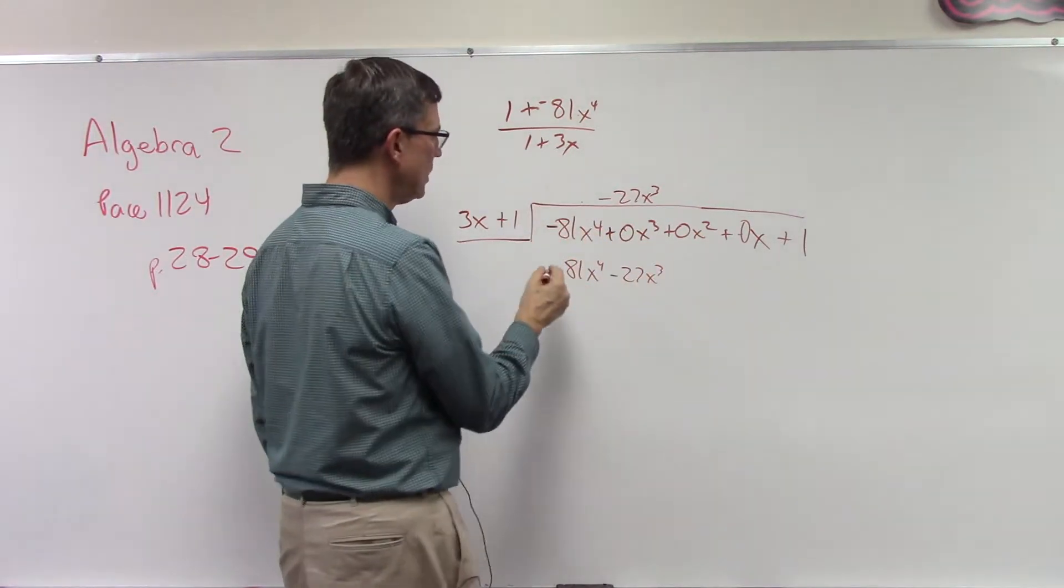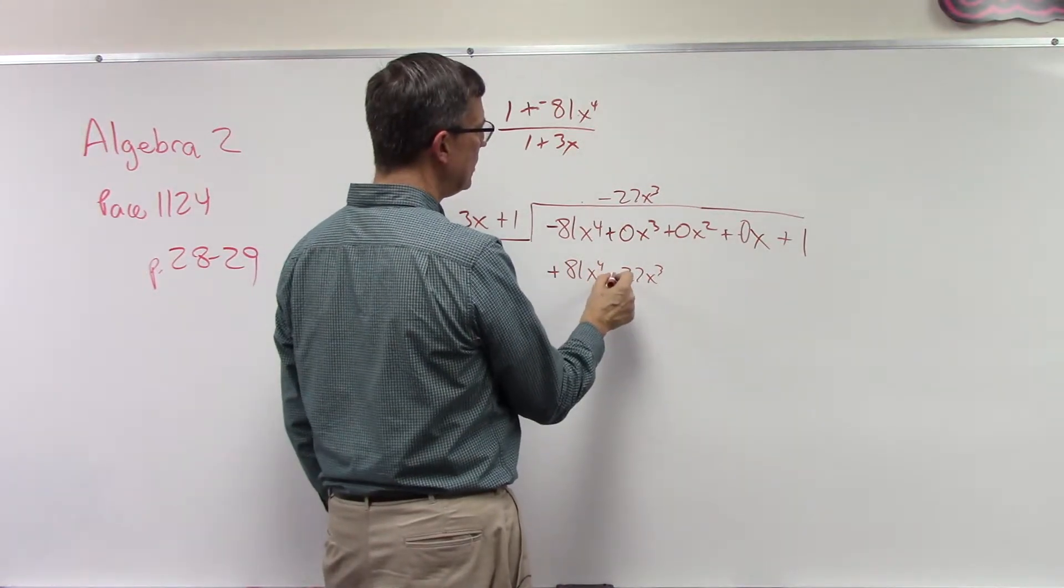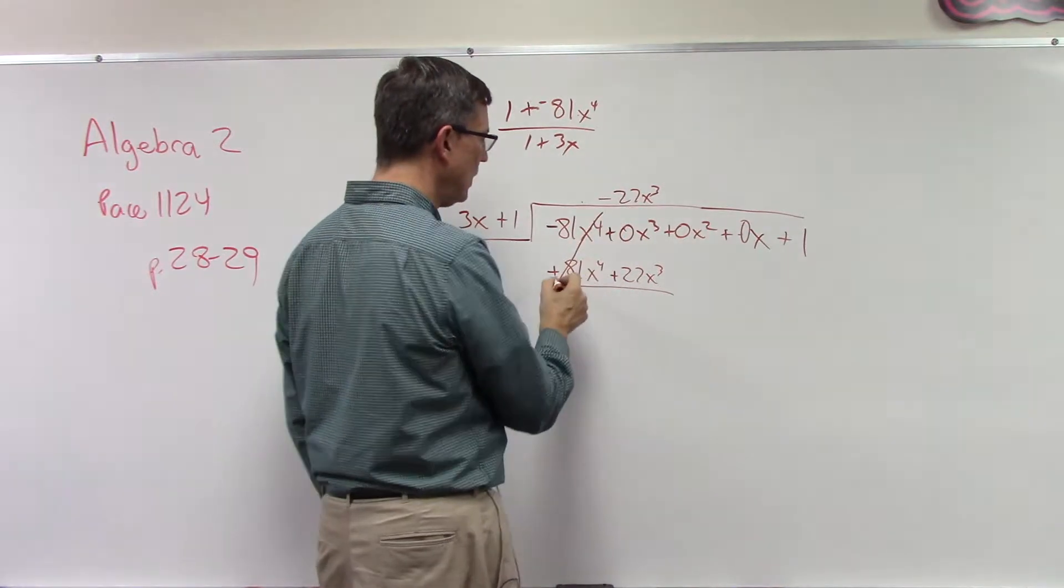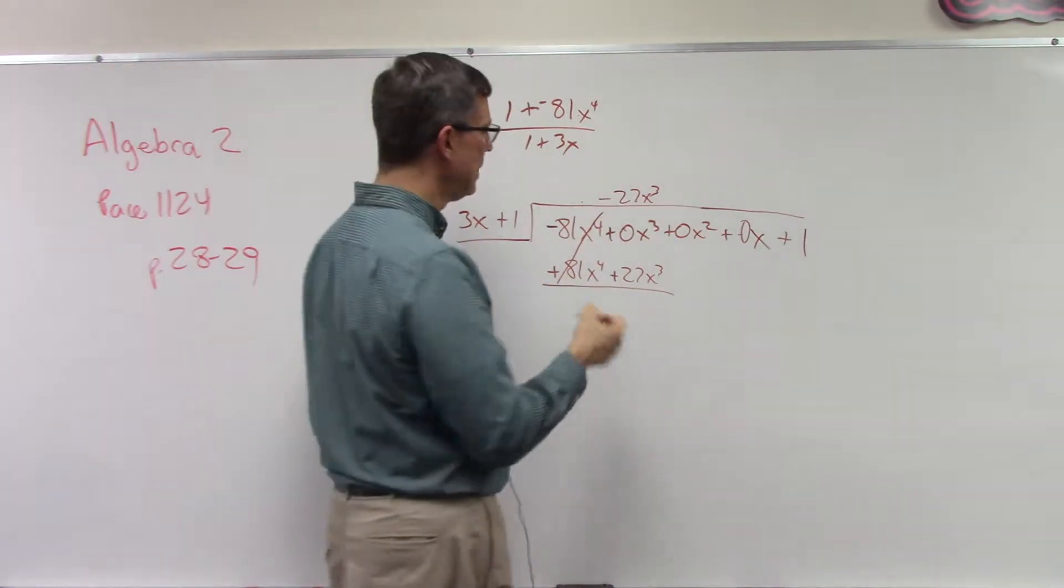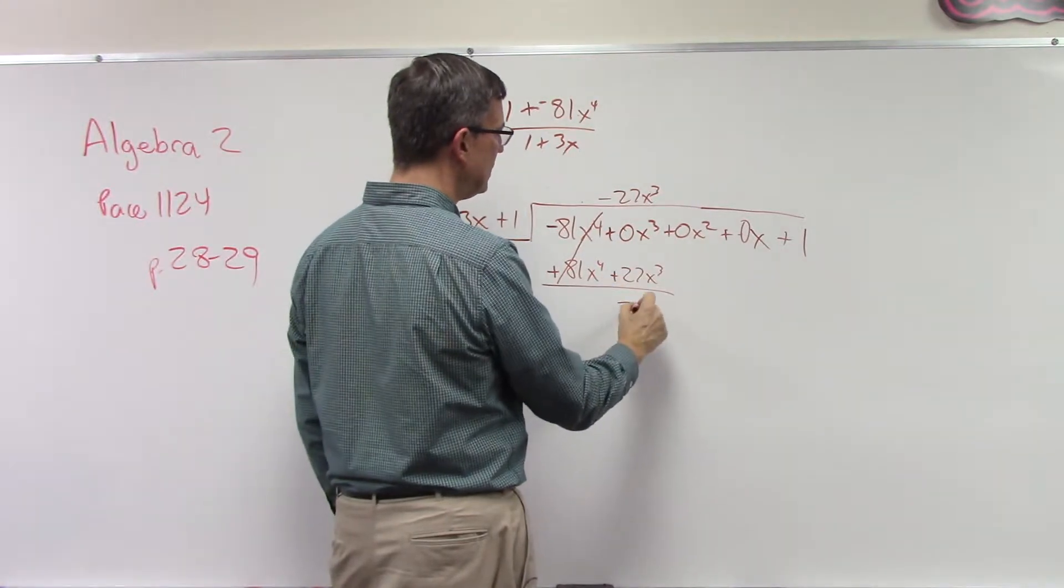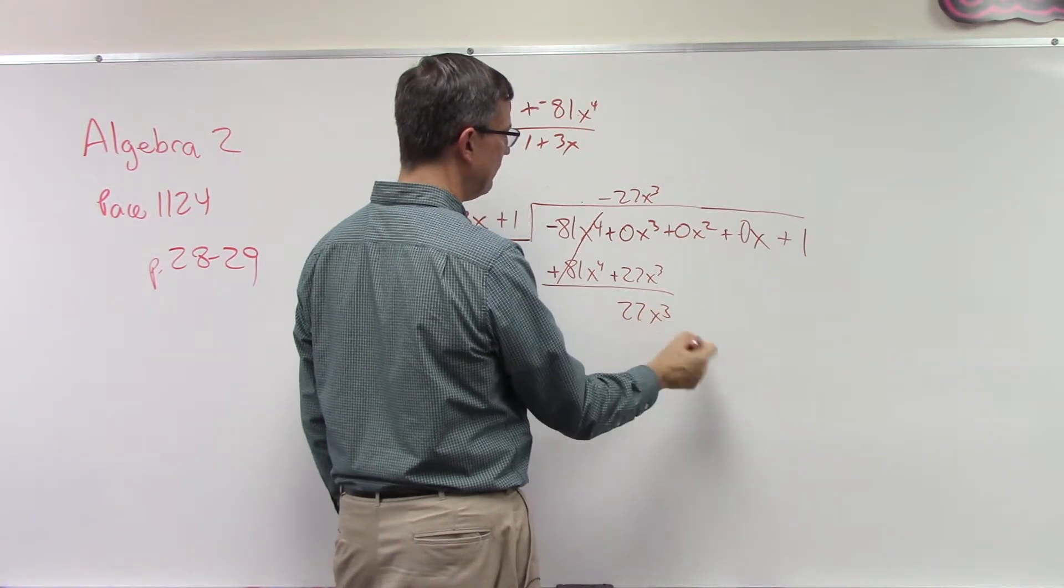Here's where most students make their mistake. We are subtracting these, so I always tell students just go through and change all of them to their opposites and then add. That's the easy way to think about it. So we're changing this now to positive, changing this also to a positive. Now I can add and this will cancel out, and that was our whole purpose, we're trying to get that term to cancel.